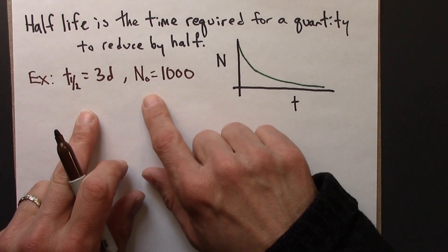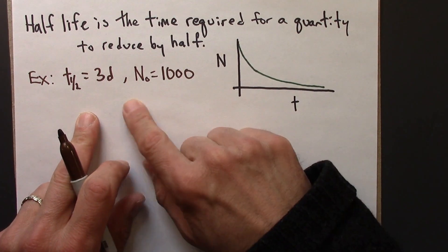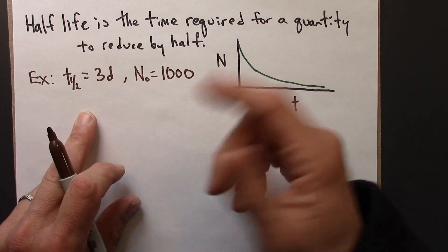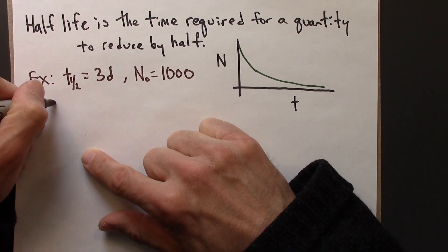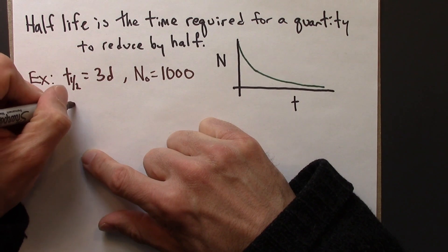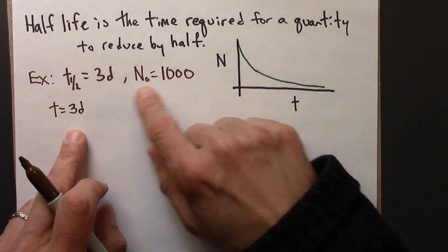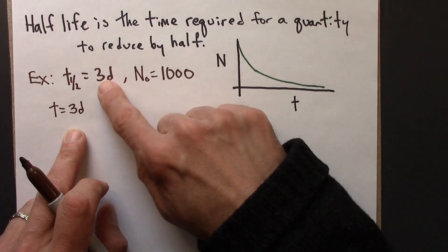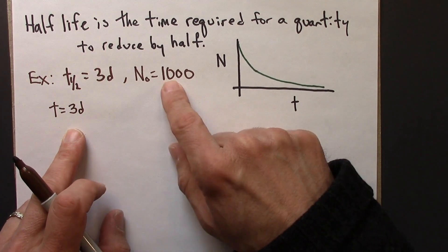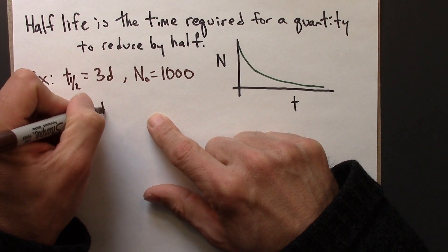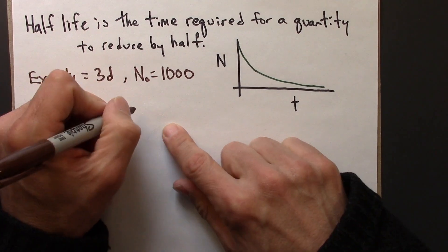Alright, so let's use this idea of half-life to figure out how much we have at later times. So when t equals three days, that's one half-life from the starting point. So this quantity will have been halved.